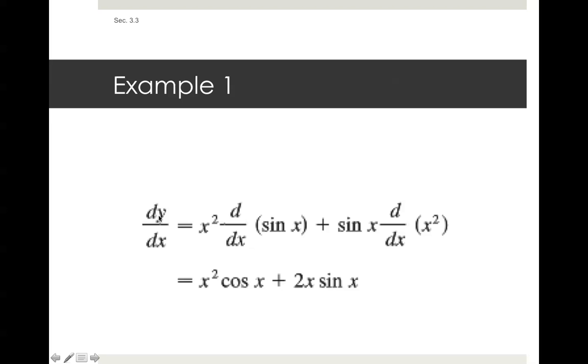Here's an example. Y equals x squared sine x. First, we take the first function times derivative of the second plus the second times the derivative of the first. What do we get when we take x squared times derivative of sine x? We're going to get x squared cosine x plus sine of x and then 2x. So we get 2x sine of x.